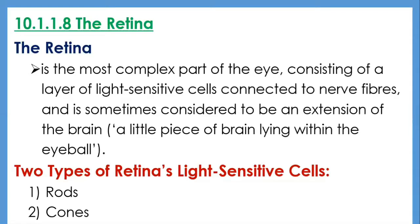The retina is the most complex part of the human eye, consisting of layers of light-sensitive cells connected to nerve fibers, sometimes considered to be an extension of the brain. Unlike photographic film, the retina actively processes incoming information before passing it on to the brain via the optic nerve. Light causes chemical changes in the light-sensitive cells, giving rise to nerve impulses. The nerve fibers converge to make up the optic nerve, and the point at which the optic nerve leaves the retina is known as the blind spot.